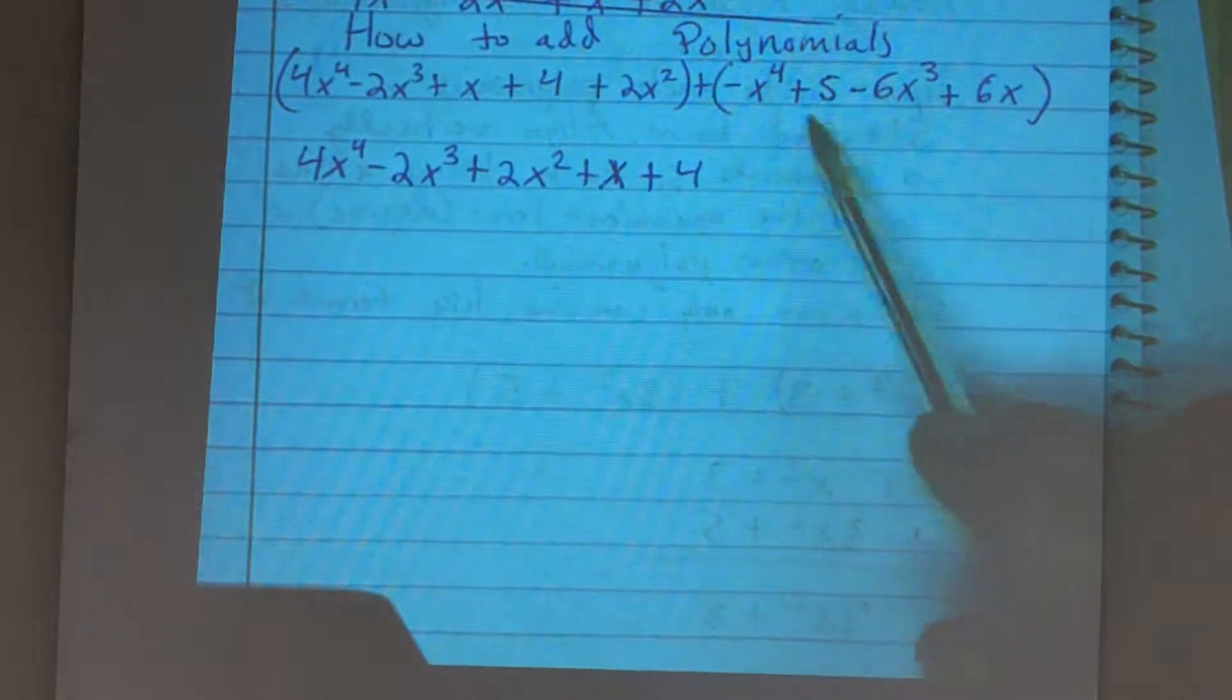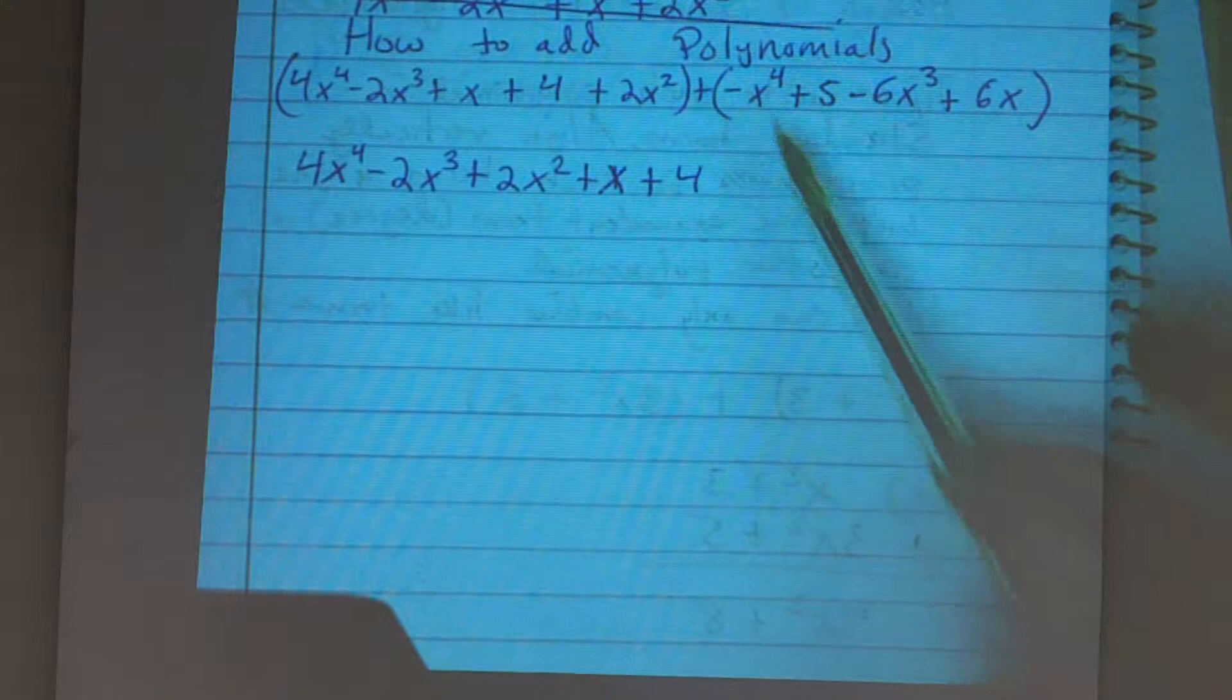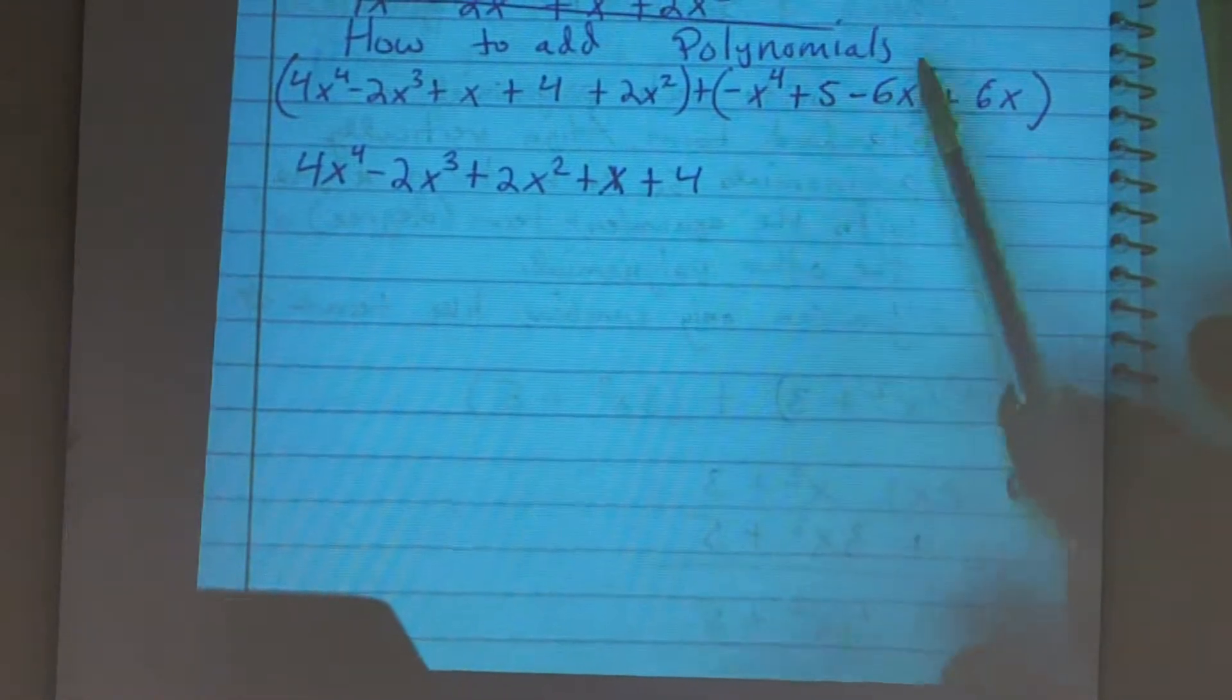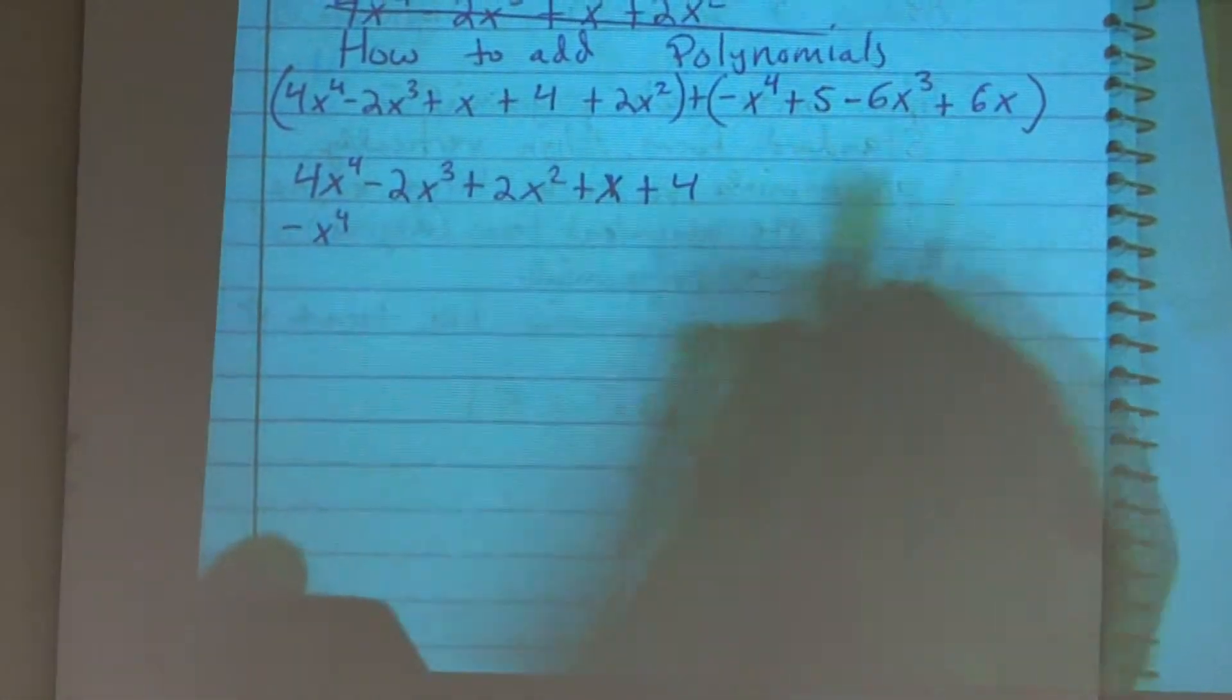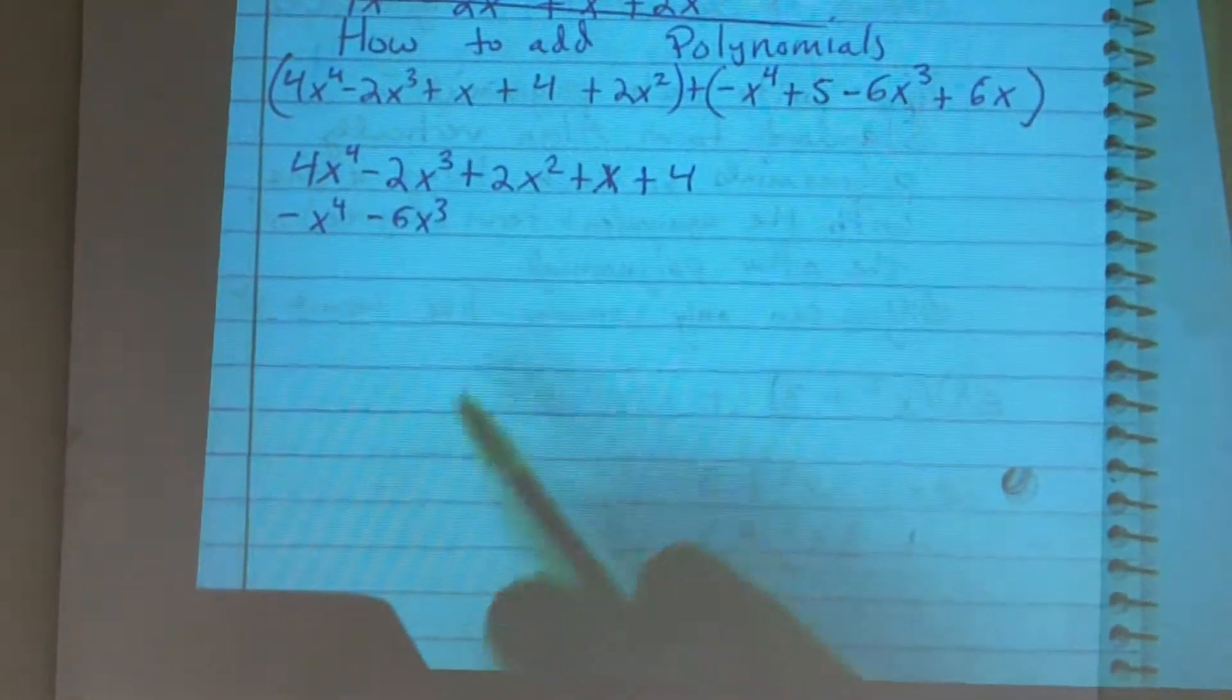Now if I look over at my next polynomial, we see that the x to the fourth is still in the front, but this x to the third is over here. So we're going to have to make sure that we rearrange it so they align vertically. So I have a negative x to the fourth. Then I have a negative 6x cubed. Now I don't have an x squared.